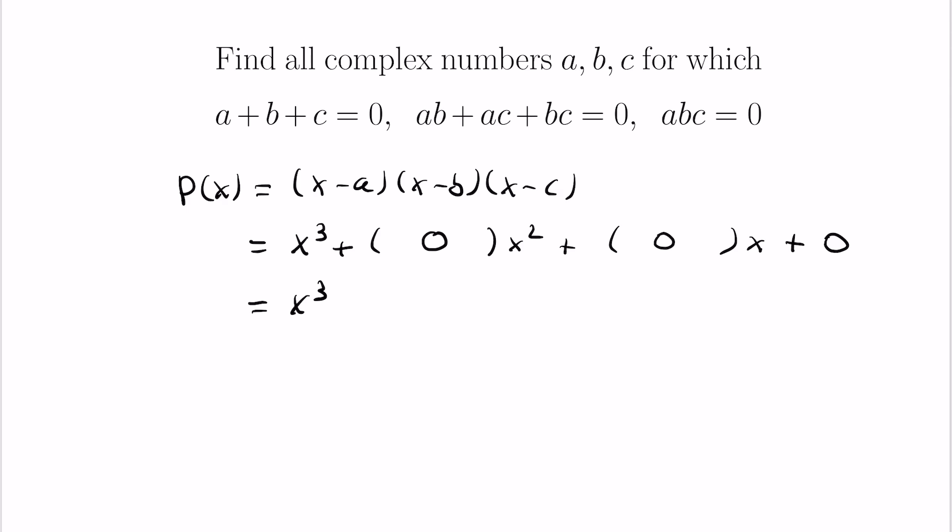So let's think about what we did here. We have these three complex numbers a, b, c satisfying these equations. And we've said that if they are roots of a polynomial, that polynomial has to be the polynomial x cubed. But the polynomial x cubed only has one root. It's the root zero. And so all of these values, a and b and c, are forced to be zero. They're roots of this particular polynomial here, and this polynomial only has zero as a root.